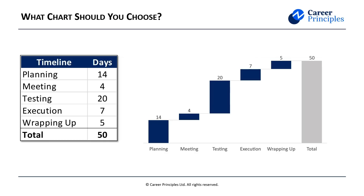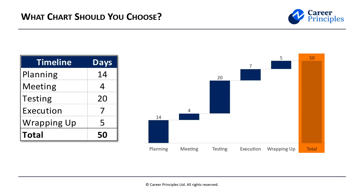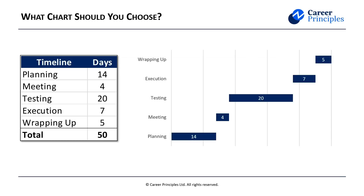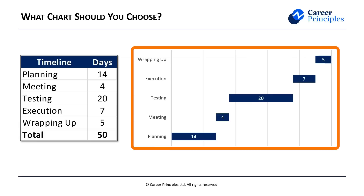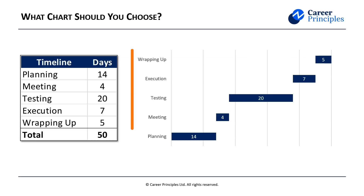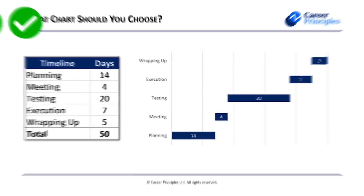As you can see in the waterfall chart, the 14 builds on the 4, and then the 20, and so forth, up until we get to a total — so it adds a bit more value there. Similarly, we could use a Gantt chart, where we go from one phase to the other and they all add on top of each other.